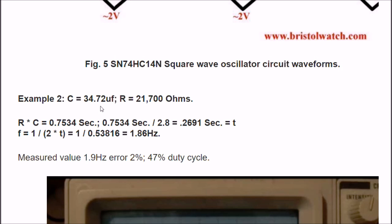C is 34.72 microfarads. I derived that, either though the capacitor itself, and it was a polarized electrolytic, said 33 microfarads. That's what it actually measured on my capacitor meter. And I'm going to reuse the 21,700 ohm resistor. R times C, in this case, gave me .7534 seconds. Or stated again, 753.4 milliseconds. Alright, 0.7534 seconds divided by 2.8 gives me .2691 seconds, or 269.1 milliseconds. That is my value for T.